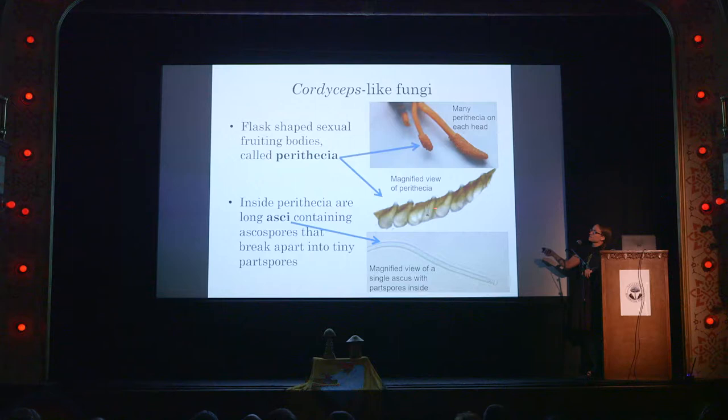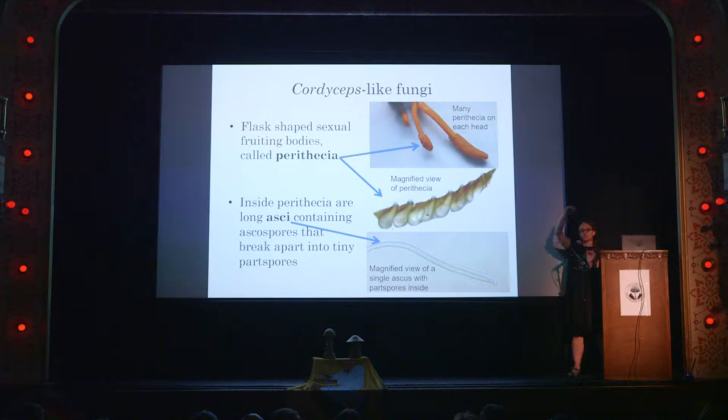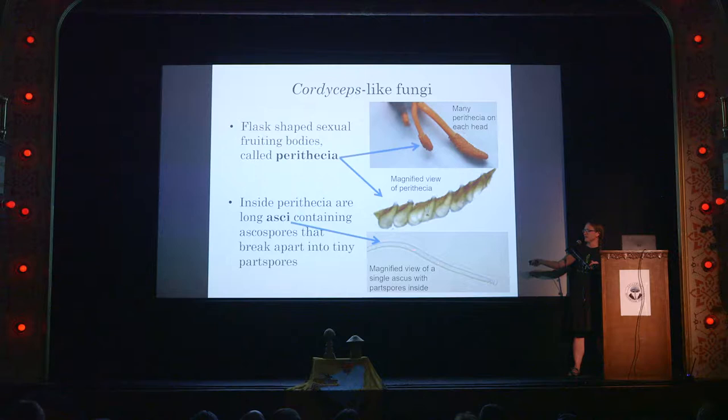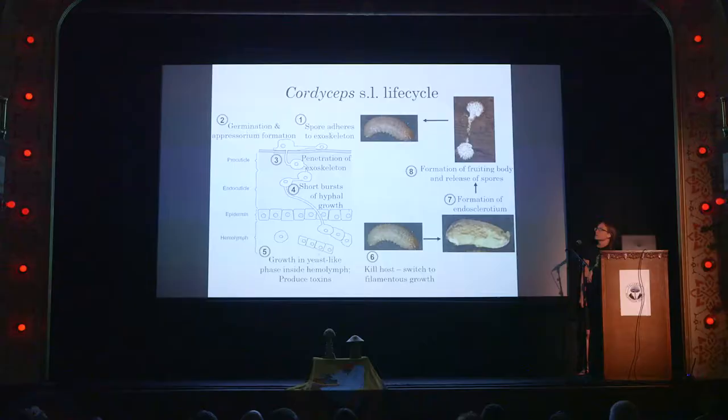These are in the Ascomycota, producing flask-shaped perithecia. Inside each perithecium, we have sexual fruiting structures called the ascus — the sac — which will produce about eight to sixteen individual ascospores, but they're really long. Most species of cordyceps will actually break up into tiny little part-spores. There are these little cross walls, these delineations. So when a new insect gets infected by the spores, we're talking about these tiny little part-spores. Instead of one perithecium producing enough to infect maybe eight insects, it's actually producing hundreds of these tiny little part-spores, which are the actual infective propagule.